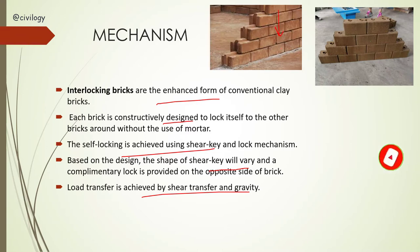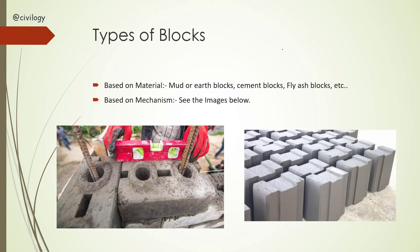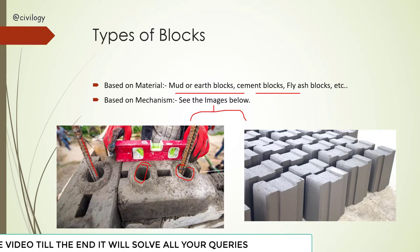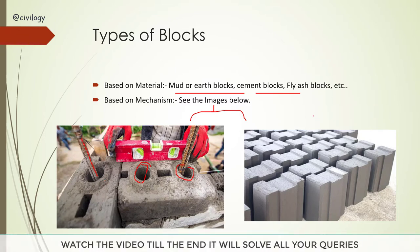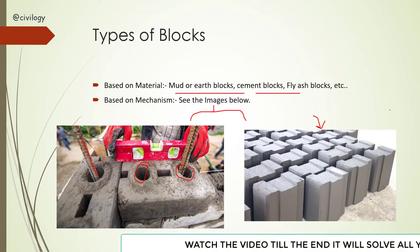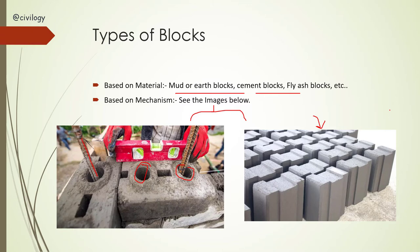Based on the material, we have mud or earth blocks, cement blocks, fly ash blocks, etc. Based on the mechanism, there are two types. The first type has two holes on the surface which are used to insert rods or reinforcement, allowing direct construction without columns. The other type uses a lock mechanism where blocks are placed without any reinforcement. If you have doubts about these two mechanisms, you can comment below or request a separate video.